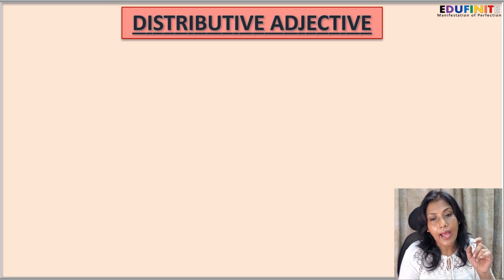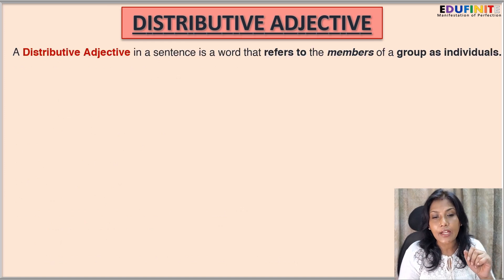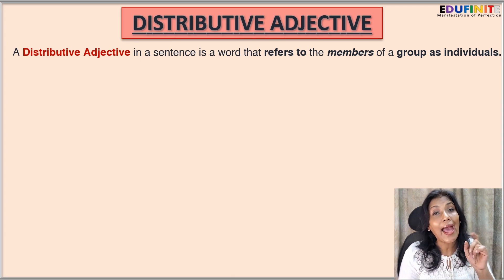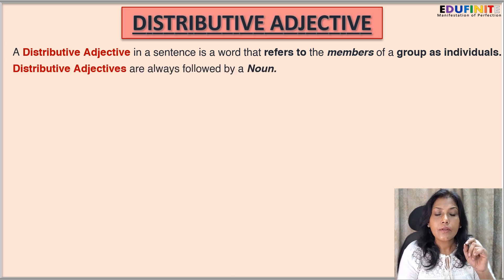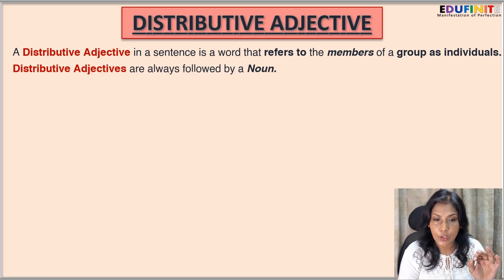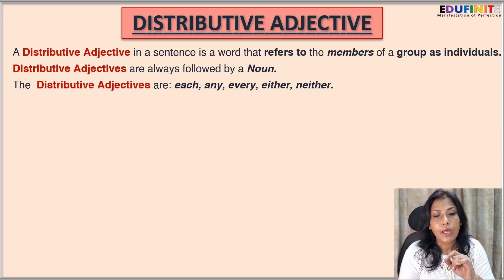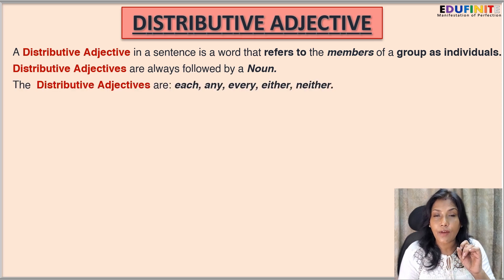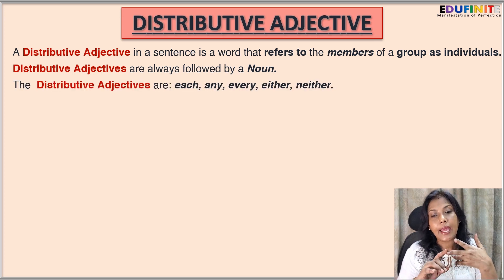Next is distributive adjective. A distributive adjective in a sentence is a word that refers to the members of a group as individuals. Distributive adjectives are always followed by a noun. The distributive adjectives are: each, any, every, either, neither.